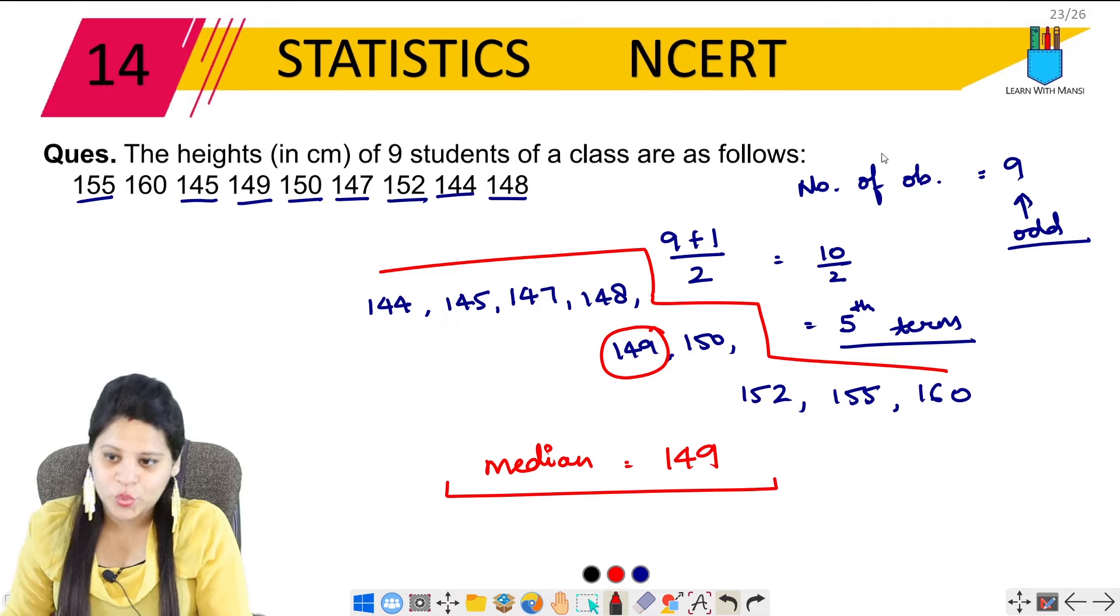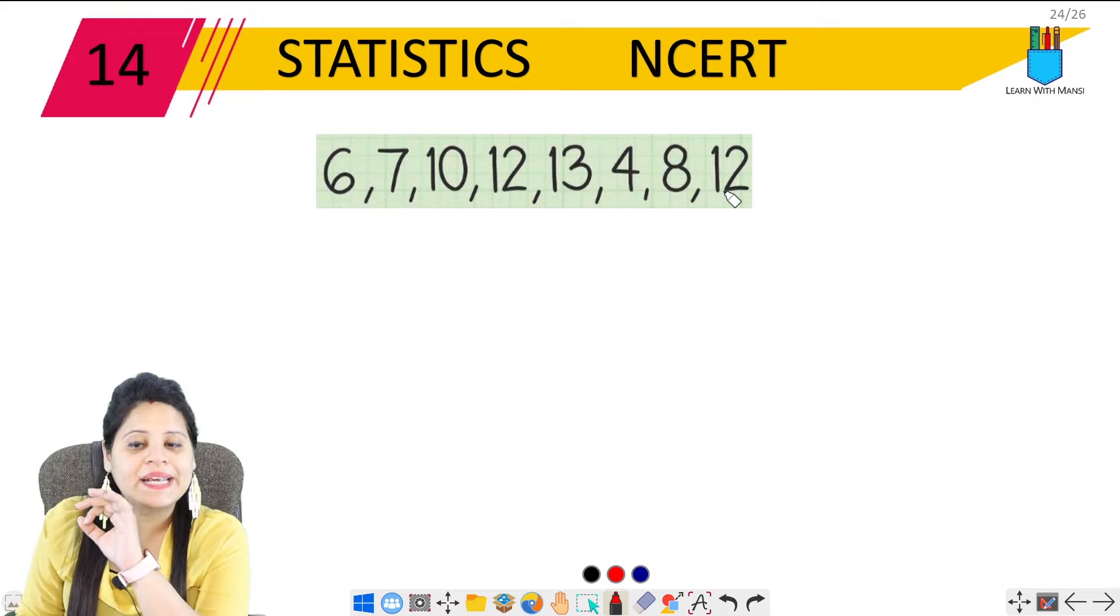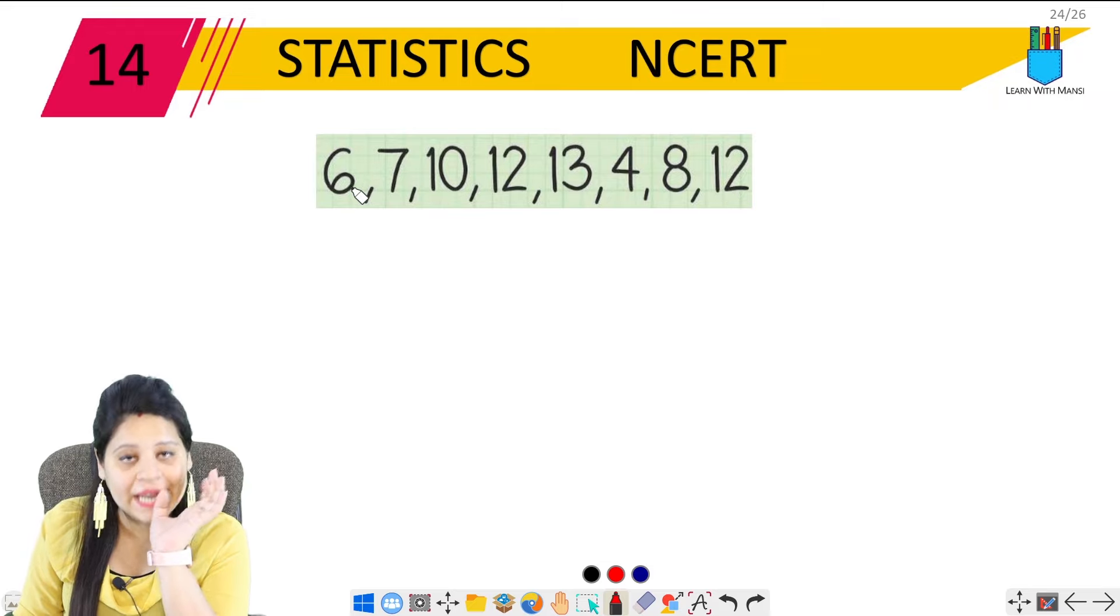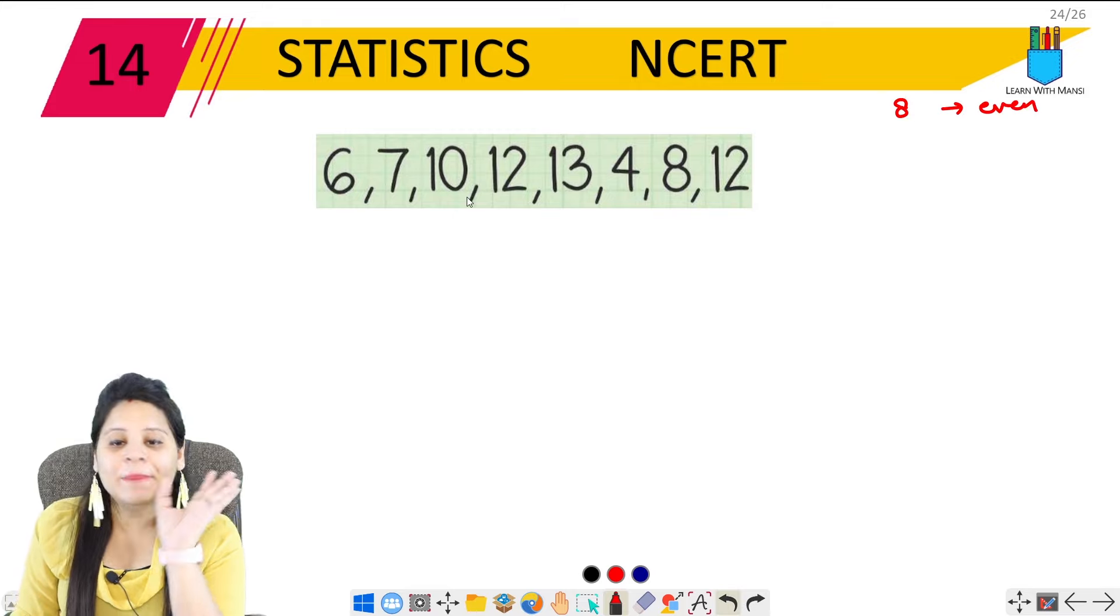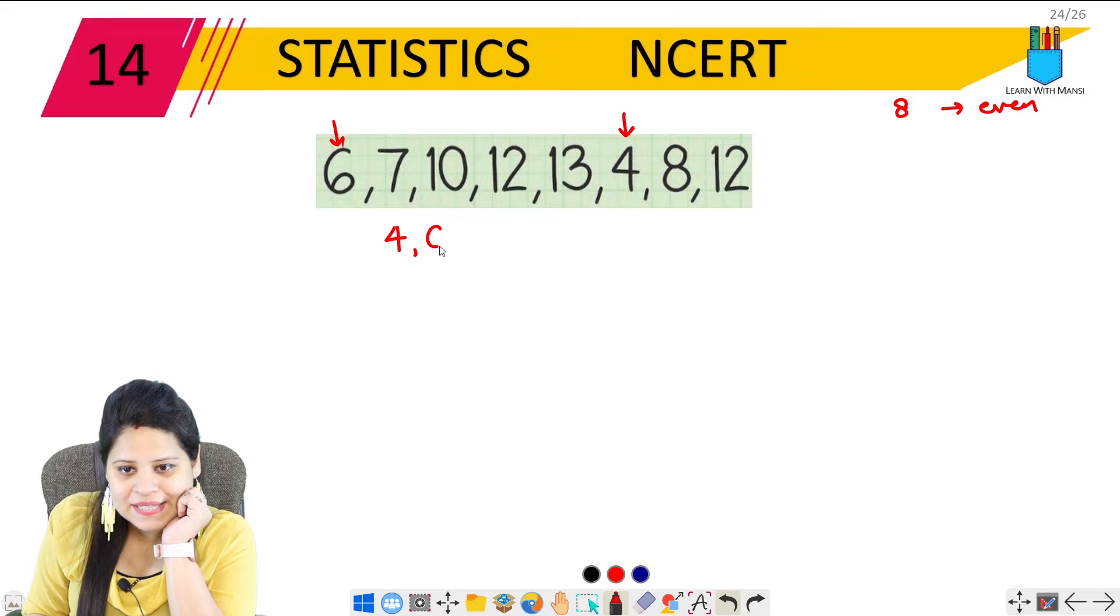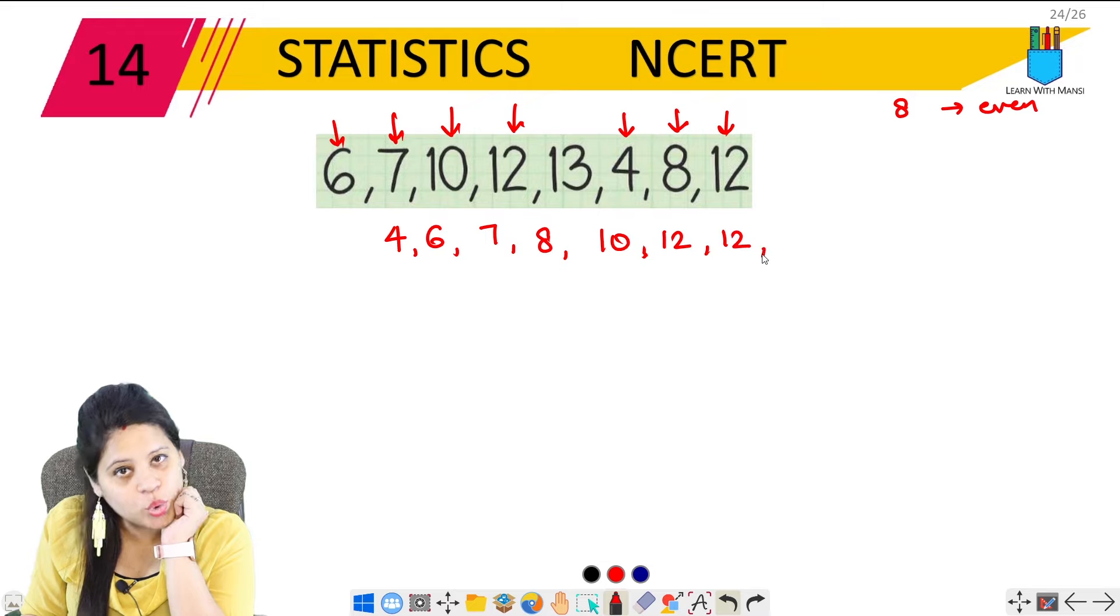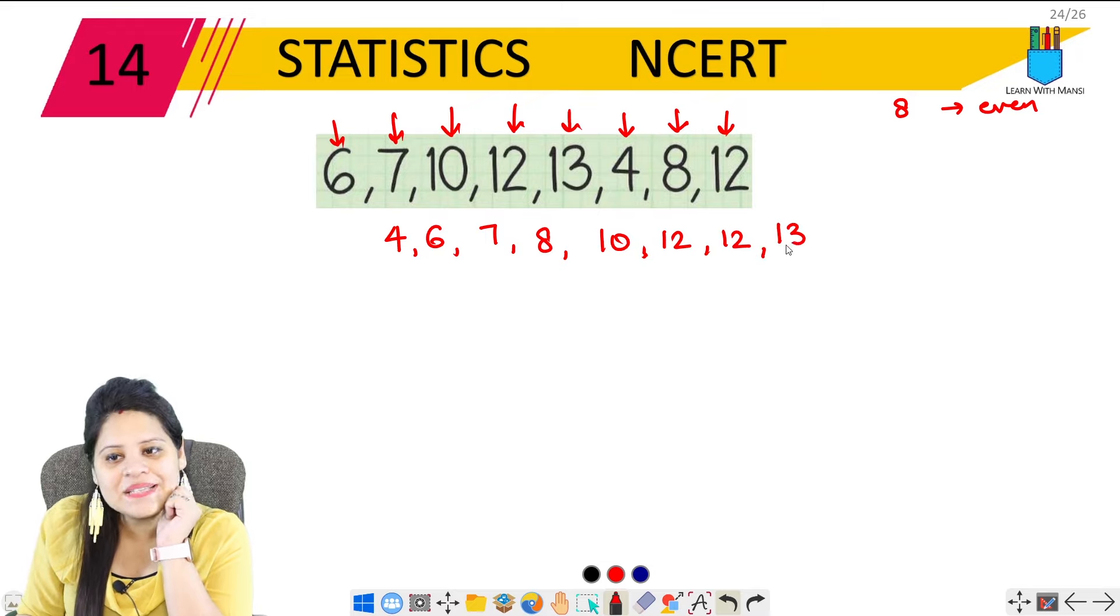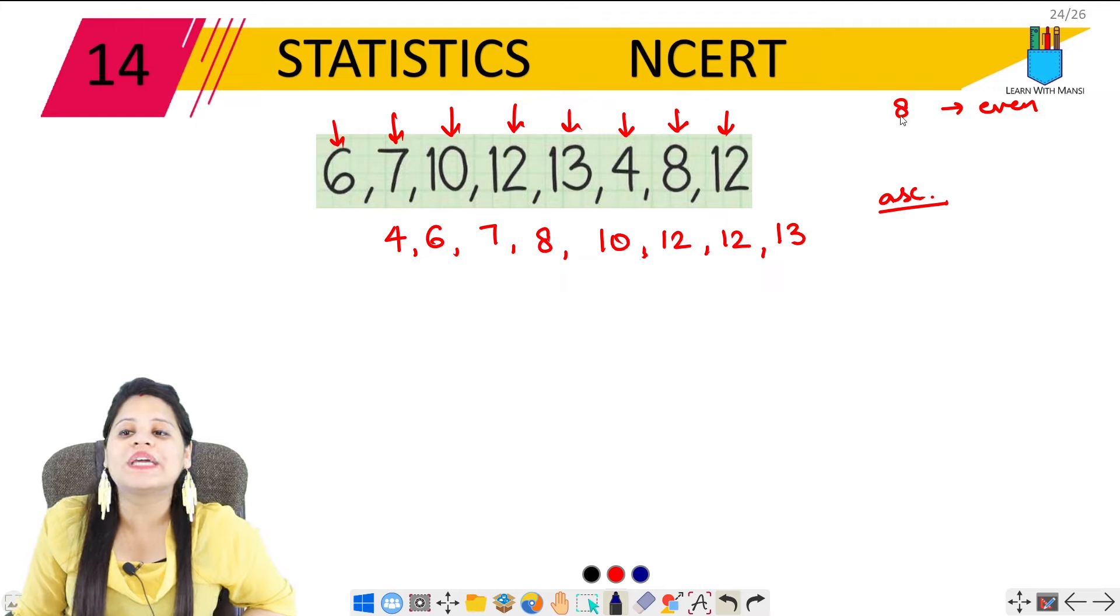What is the smallest here? The first number is 144. Next we have 145, then 147, then 148, then 149, and after 149 it's 150. After 150 it's 152, then 155, and last number is 160. Now this data is arranged. After this it's 5th term. So 1, 2, 3, 4, 5 - which means 149. So the median of this data is 149.